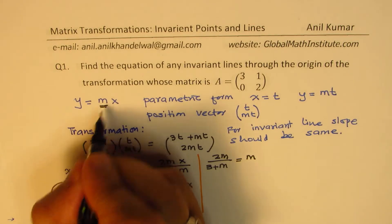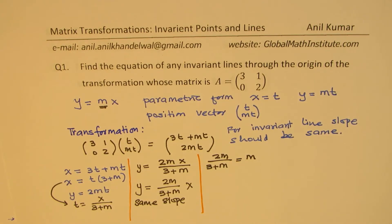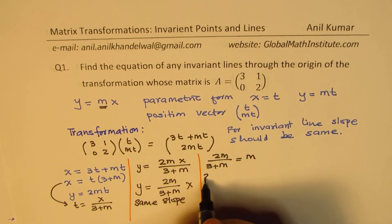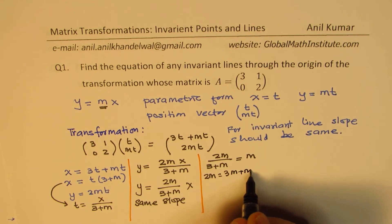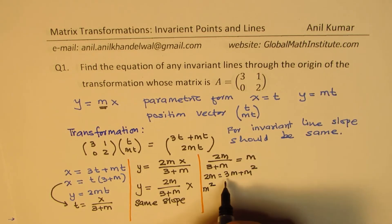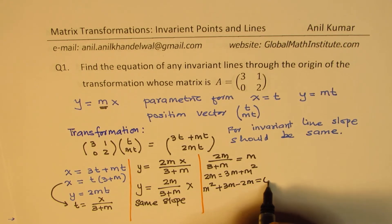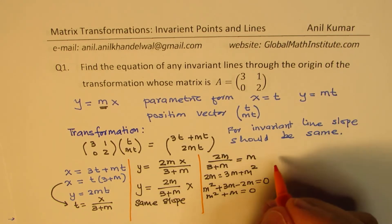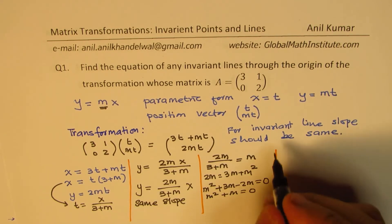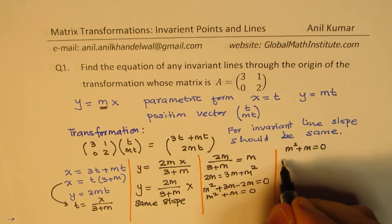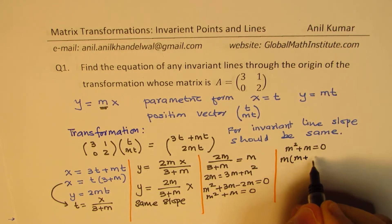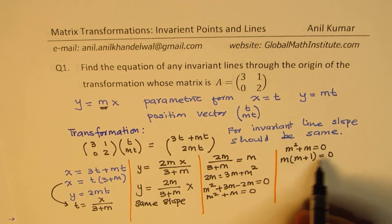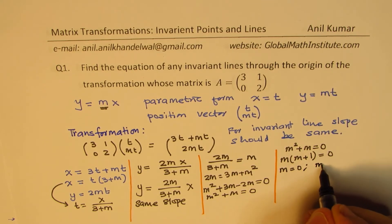So 2M over (3 plus M) should equal M. We now get a quadratic equation. Cross-multiplying: 2M equals 3M plus M squared. Rearranging: M squared plus 3M minus 2M equals 0, giving M squared plus M equals 0. Solving by taking M common, we get M times (M plus 1) equals 0, so M equals 0 or M equals minus 1.